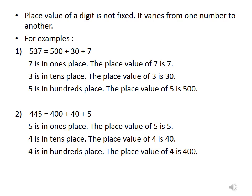445, which can be written as 400 plus 40 plus 5. 5 is in 1's place. So, the place value of 5 becomes 5. 4 is in 10's place. So, the place value of 4 is 40. Now, see, again here in 100's place, again the number is 4. So, its place value here, it will become 400.